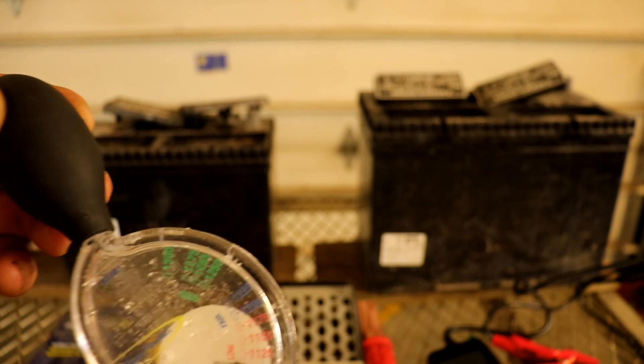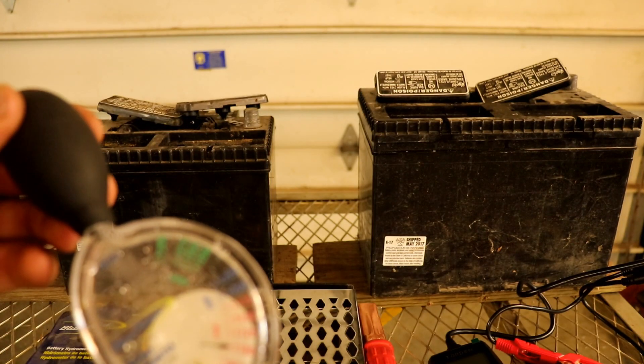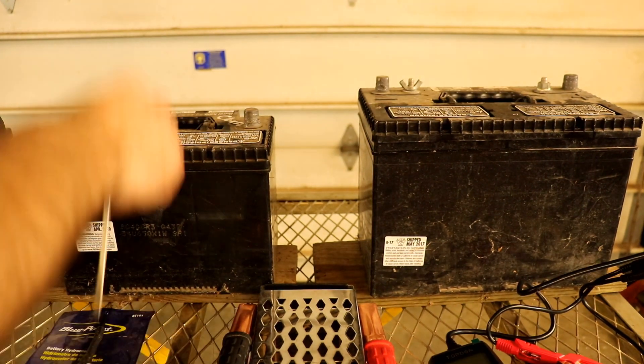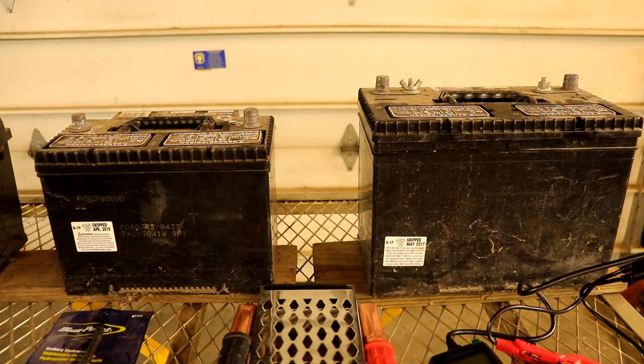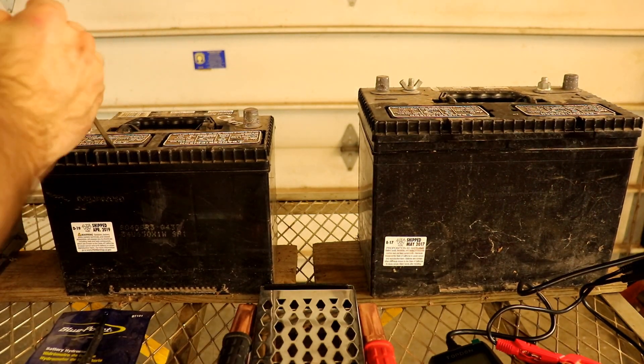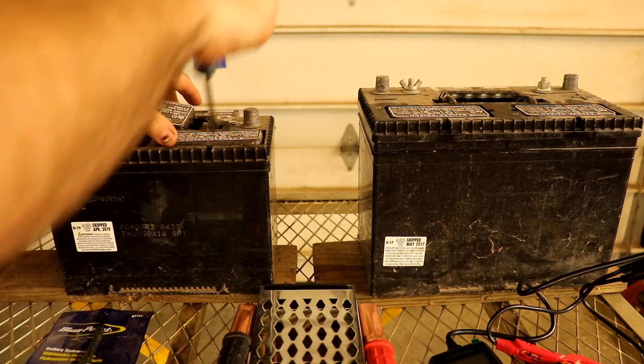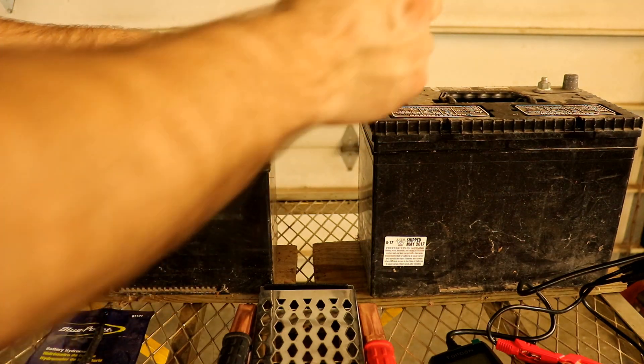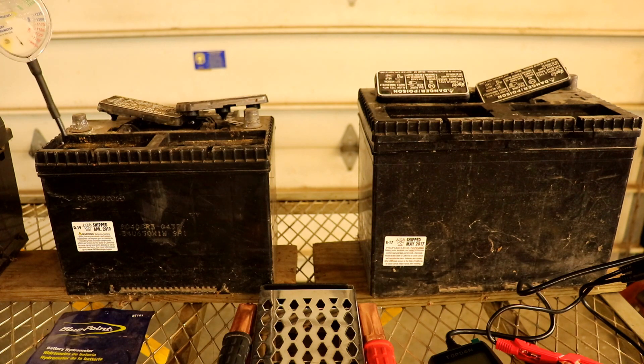So you need to remove the caps on the battery. It'd be a good idea to wear safety glasses. Now the problem with checking a battery with a multimeter is the voltage can show good, but you can have a bad cell or a weak cell.